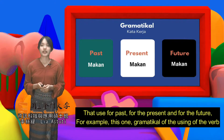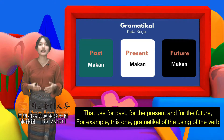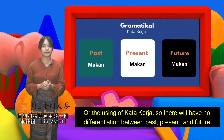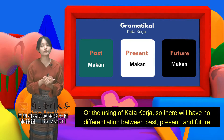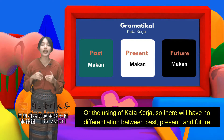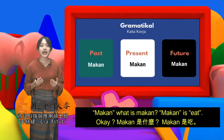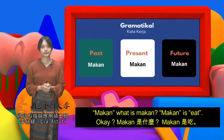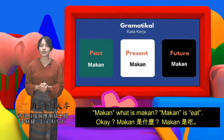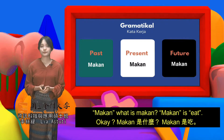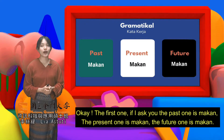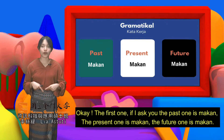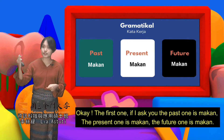For example, let's look at the verb makan, which means 'eat.' In Indonesian, there is no differentiation between past, present, and future for verbs. The past form is makan, the present form is makan, and the future form is also makan. In English, however, the verb 'eat' changes: eat (present), ate (past), eaten (past participle).